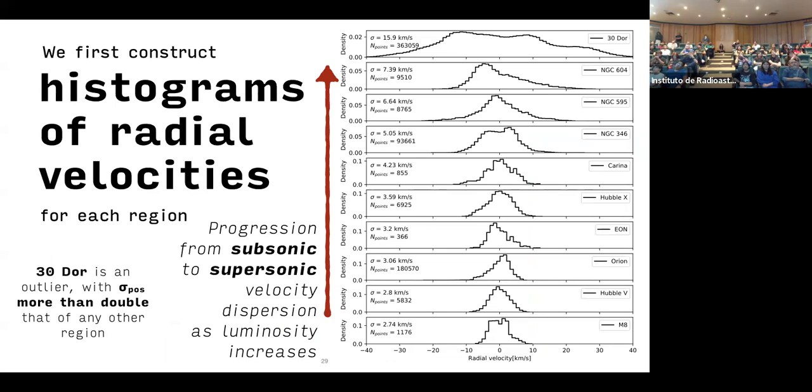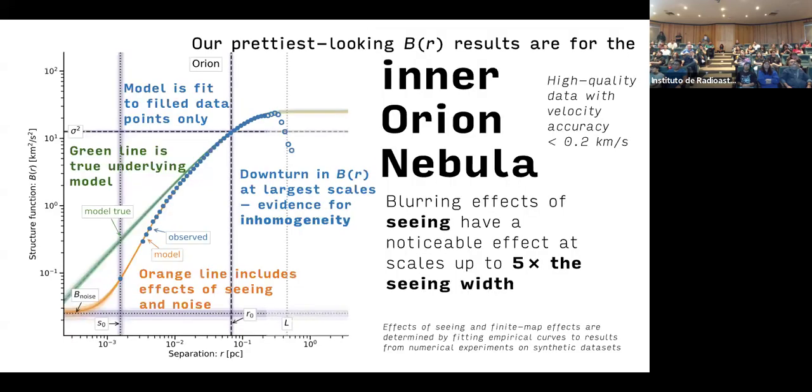The regions vary greatly in the line of sight velocity dispersion. This is the centroid velocity at each point on the plane of the sky, constructing these histograms, which has the advantage over line profile that they're not affected by anything other than the kinematics. The lowest velocity dispersions are about three kilometers a second, going up to about 16 kilometers a second.